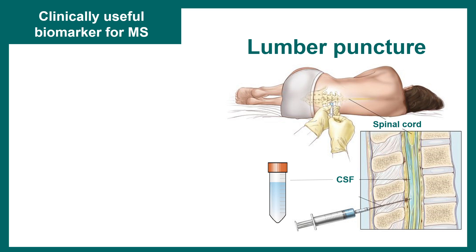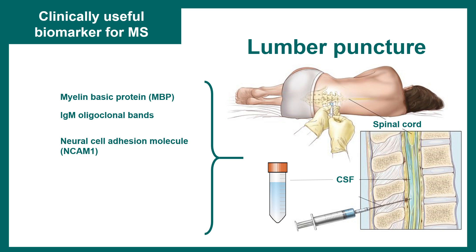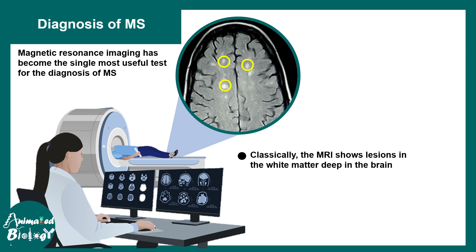Many clinically relevant CSF-derived biomarkers have been discovered for MS. After lumbar puncture and proteomic studies, myelin basic protein, IgM oligoclonal bands, neural cell adhesion molecules (N-CAMs), osteopontin, and CXCL13 can all serve as important biomarkers, monitorable in early disease stages for better prognosis. Additionally, clinical MRI remains confirmatory, showing multiple lesions in the brain marked by yellow circles.